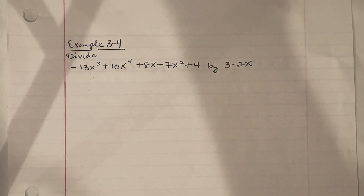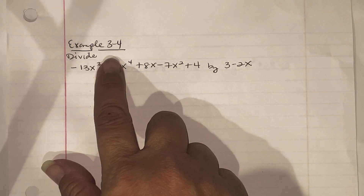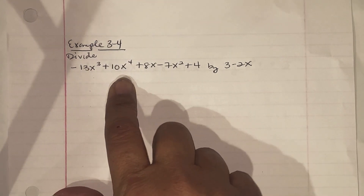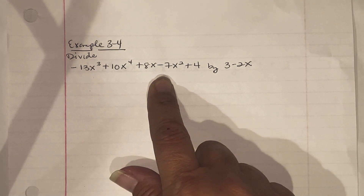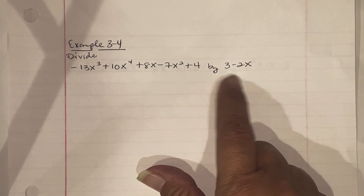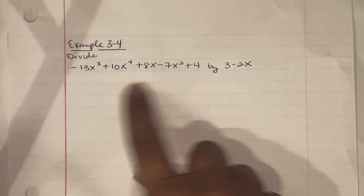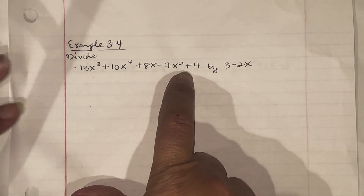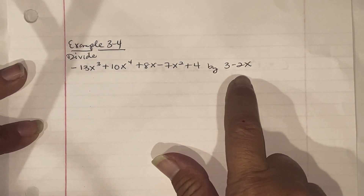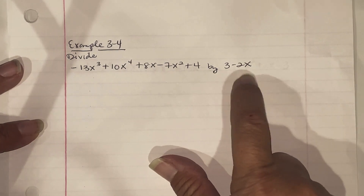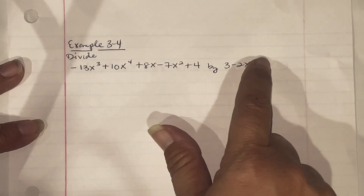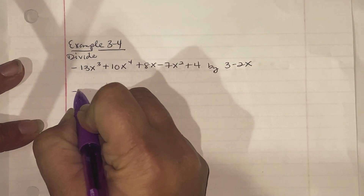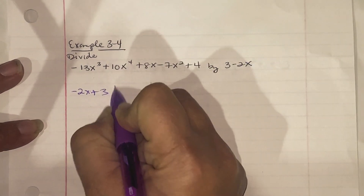Example 3/4: Divide negative 13x cubed plus 10x to the fourth plus 8x minus 7x squared plus 4, by 3 minus 2x. Notice the polynomial is not in decreasing power order, and the divisor is not in order either. First, rewrite 3 minus 2x as negative 2x plus 3, and we'll use long division.